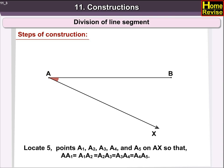To locate 5 points, since M plus N is equal to 5: A1, A2, A3, A4 and A5 on AX so that AA1 is equal to A1A2 is equal to A2A3 is equal to A3A4 is equal to A4A5.